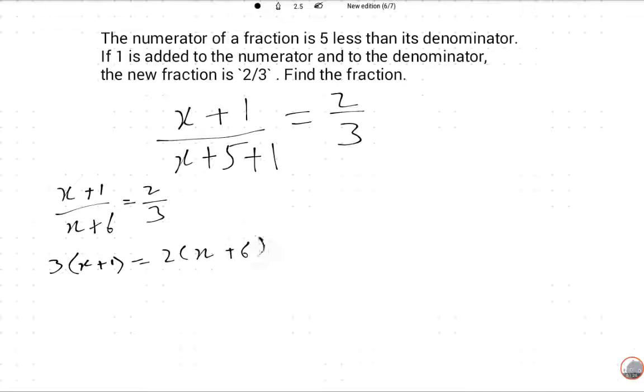3x + 3 is equal to 2x + 12. We will arrange: 3x - 2x is equal to 12 - 3, so x is equal to 9.